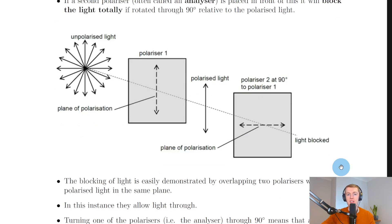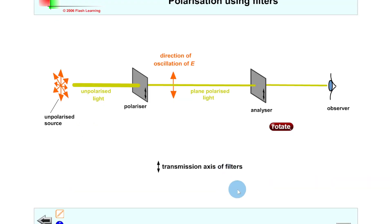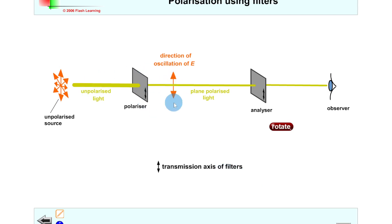Now a quick simulation to help you visualize this. We have a setup with the unpolarized light on the left, then a polarizer polarizing the light in the vertical plane only, showing our plane polarized light in the vertical plane. Then if you've got a second polarizer — your analyzer — you can see how the light will change for the observer.